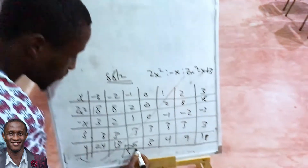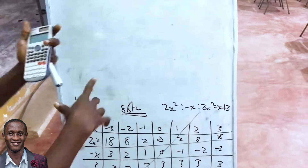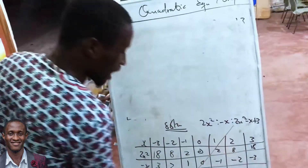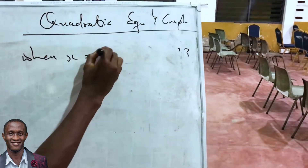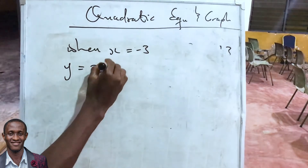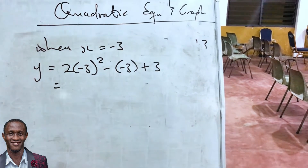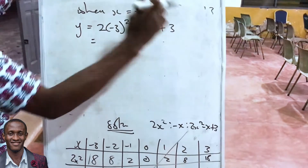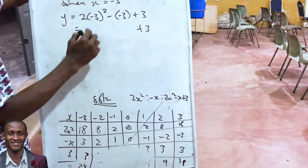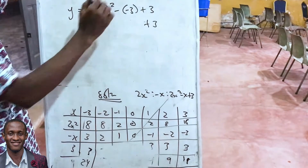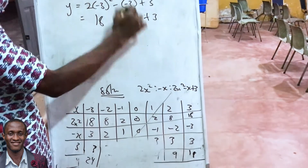When you sketch your graph with correct axes, labels, and scale, they mark it and award marks like B3 or B5. Then you show working: when x = -3, y = 2(-3)² - (-3) + 3 = 18 + 3 + 3 = 24. You just pick the values from the table columns you already filled.